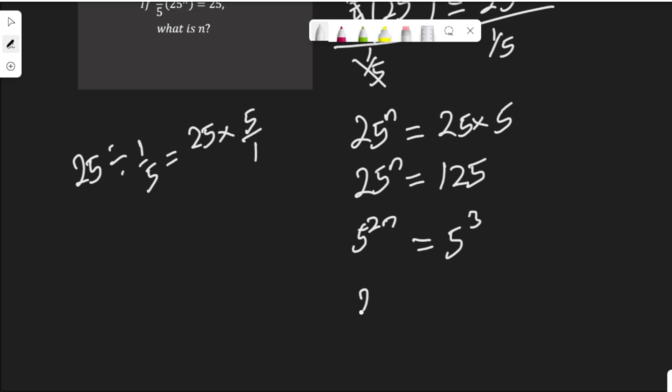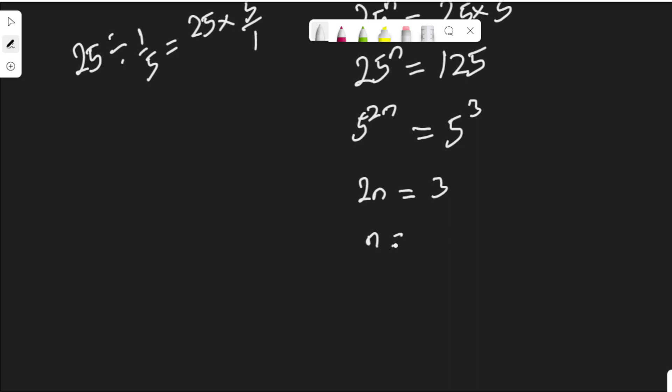The bases are the same, so we can equate the indices. 2n is equal to 3. That means n is equal to 3 divided by 2.